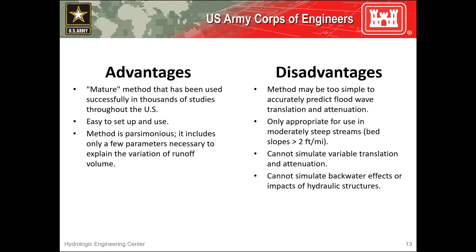The main advantage of this method is that it's simple. Because it's simple, it's been successfully used all over the world for numerous types of applications. Also, this method is parsimonious — a small number of variables or parameters are used to explain something, which allows for easy investigation of model uncertainty. However, the primary disadvantage of this method is also that it's simple. This method cannot simulate variable translation and attenuation effects — you only get one go by defining a constant k, x, and number of sub-reaches for a simulation.